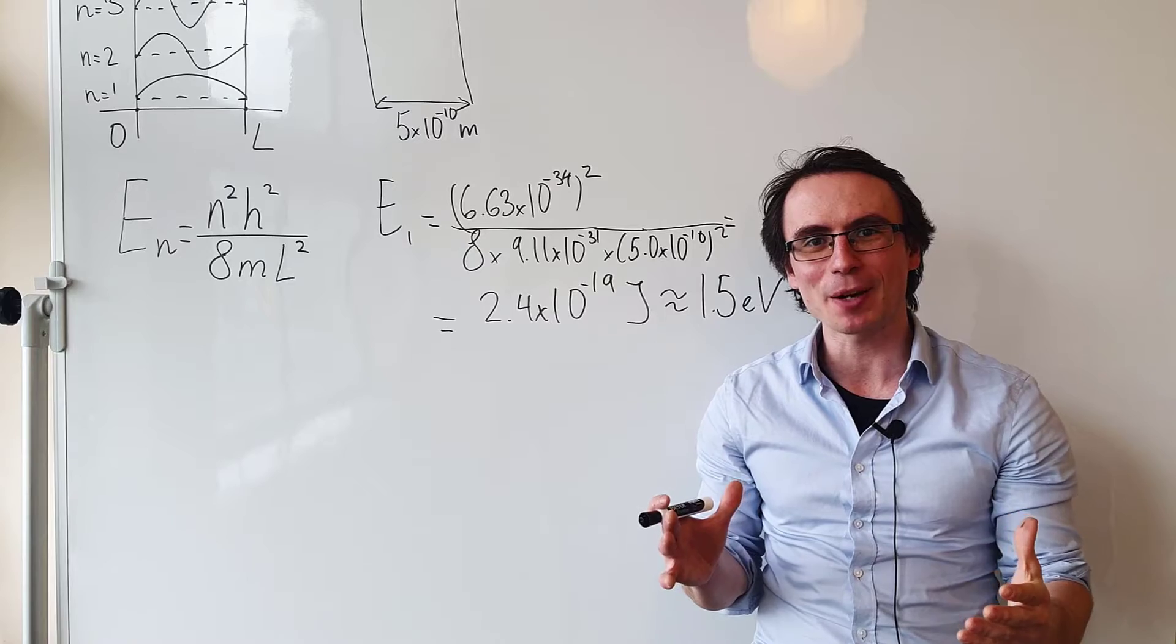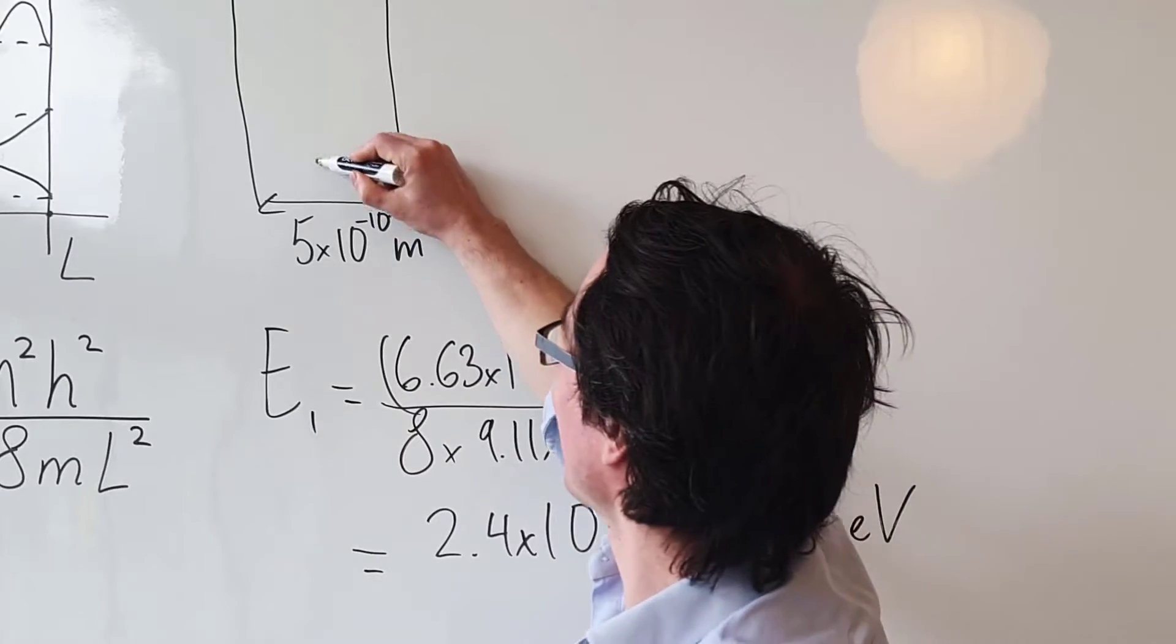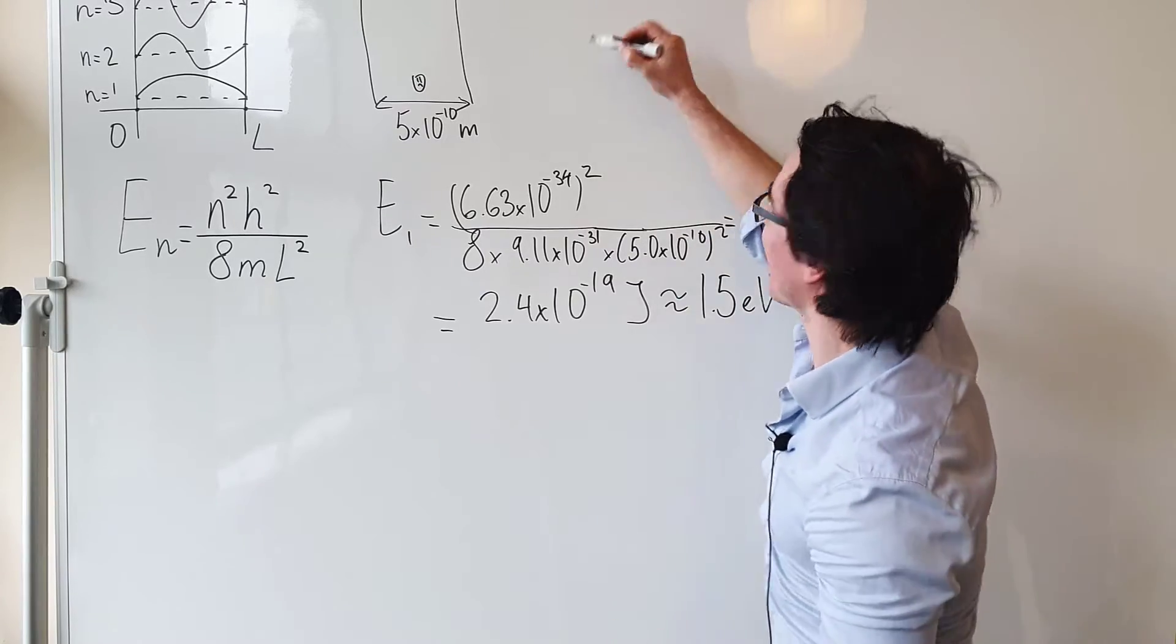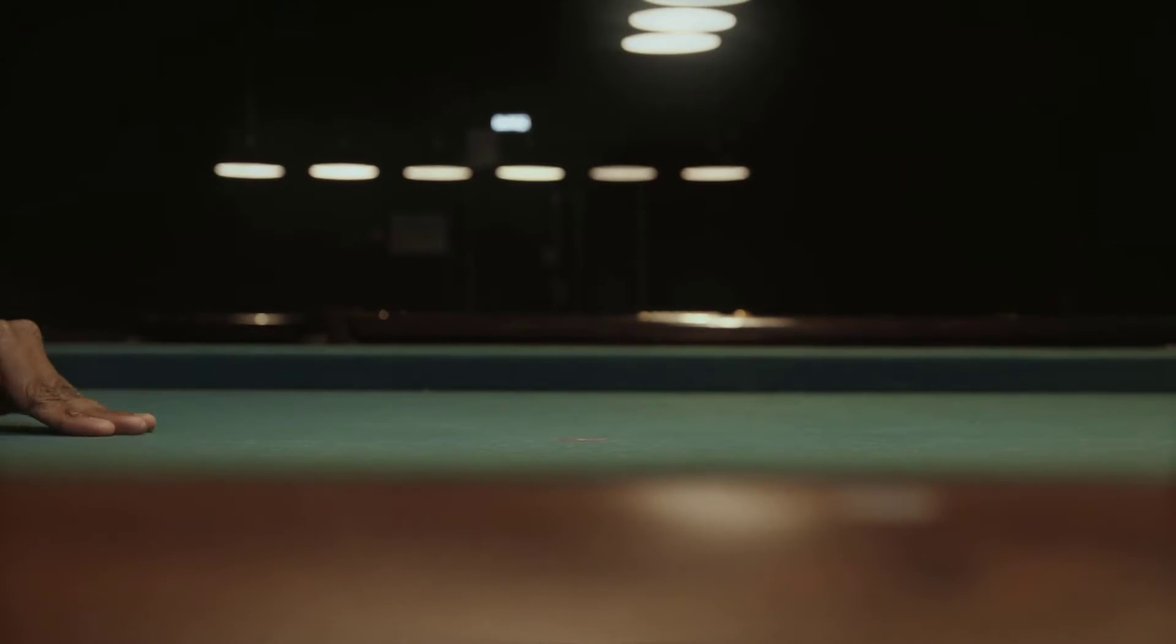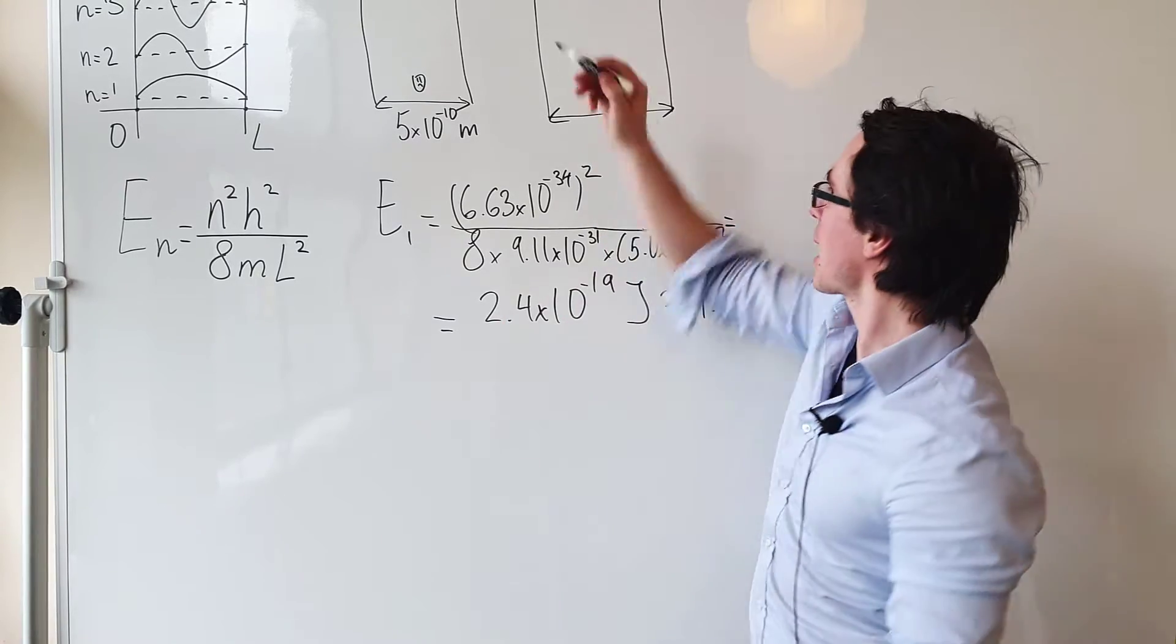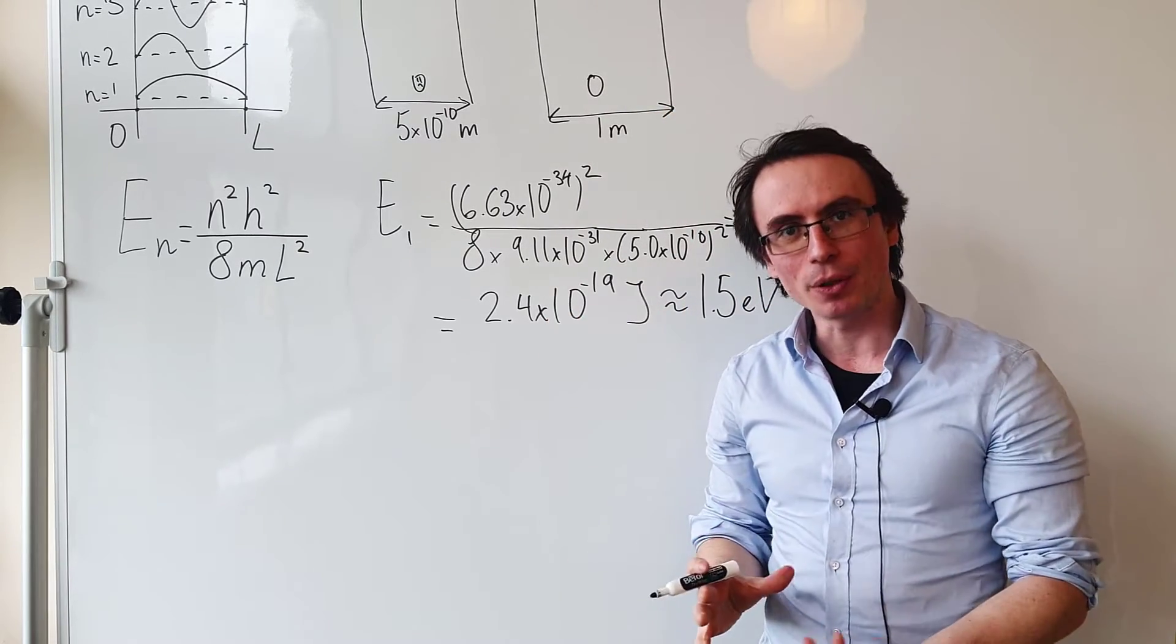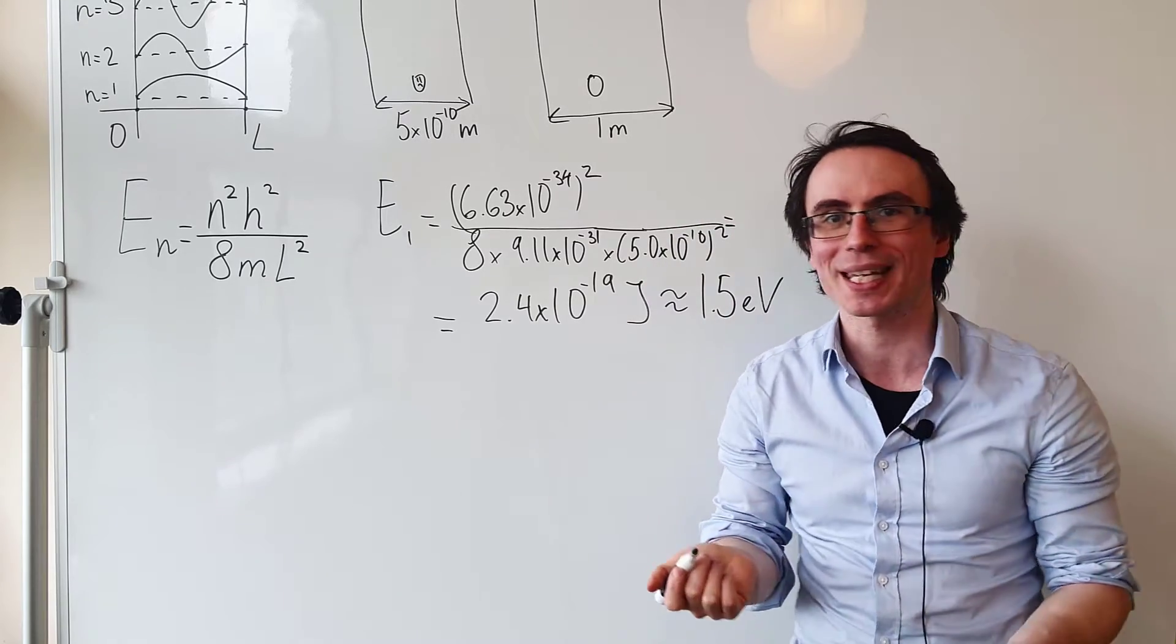Let's repeat exactly the same calculation for a macroscopic object. Rather than a little electron trapped within an atom, let's imagine we have a billiard ball bouncing back and forth between a normal box of about 1 meter. What will be the lowest energy level of this ball according to quantum mechanics?